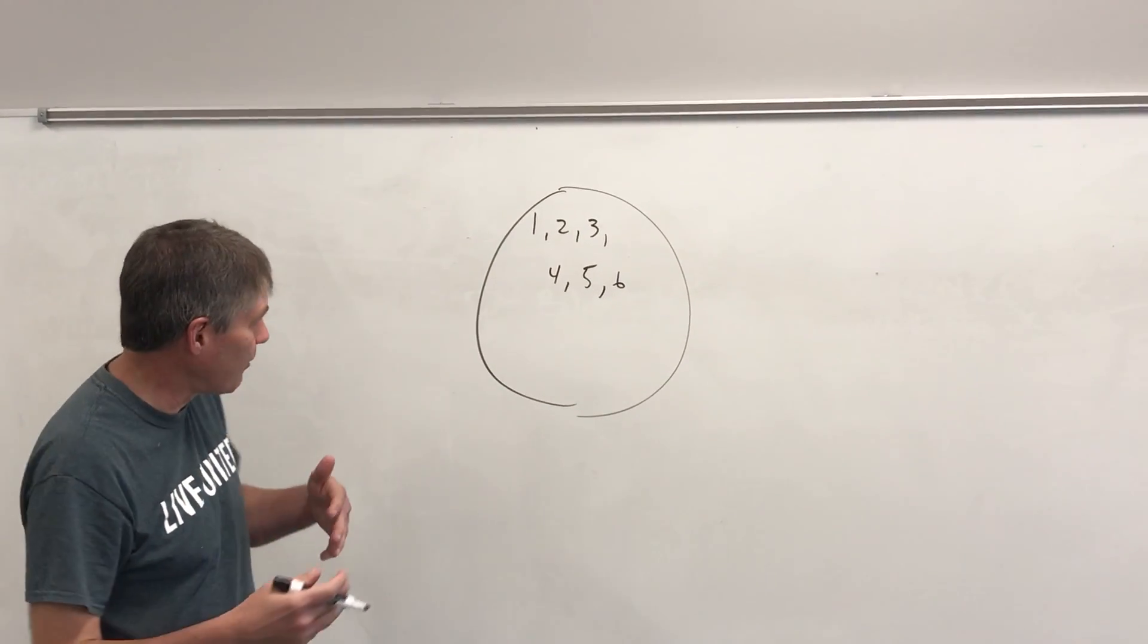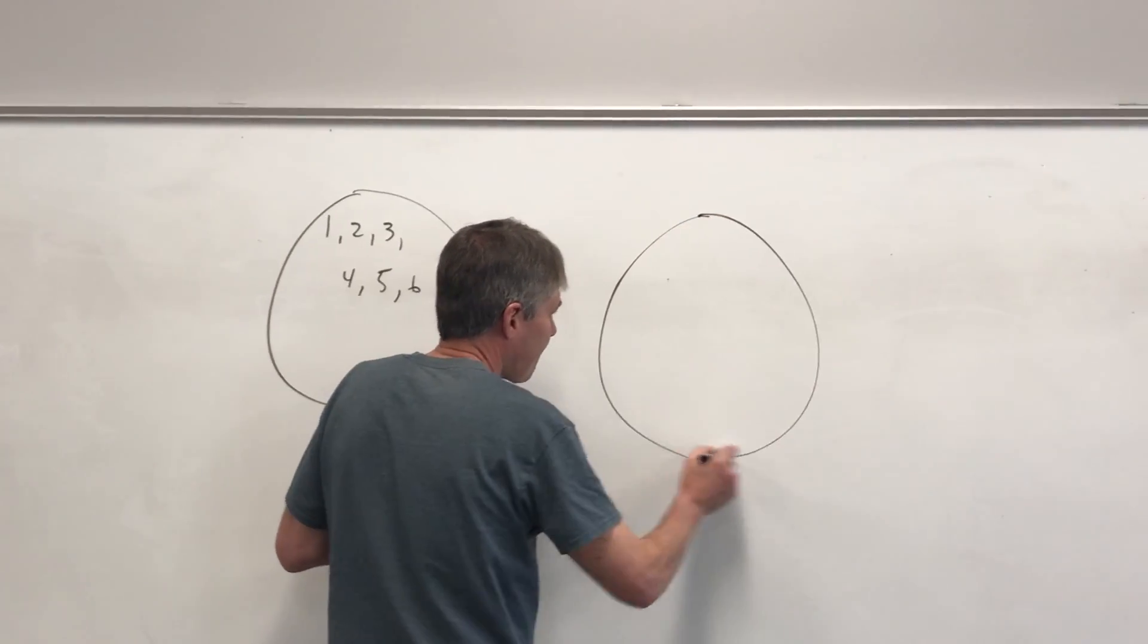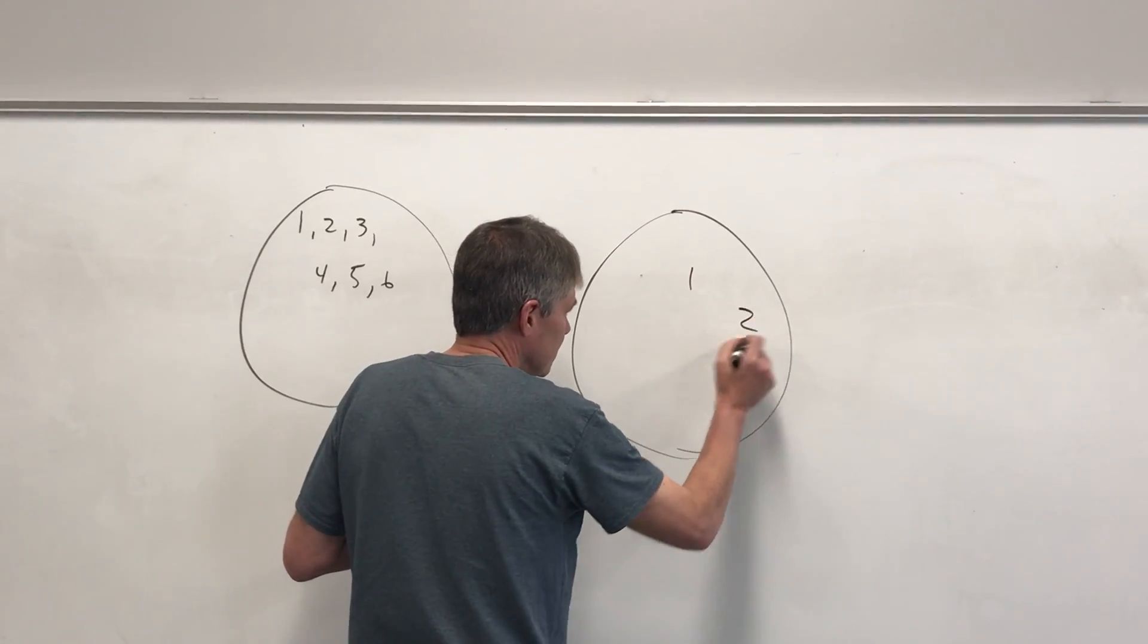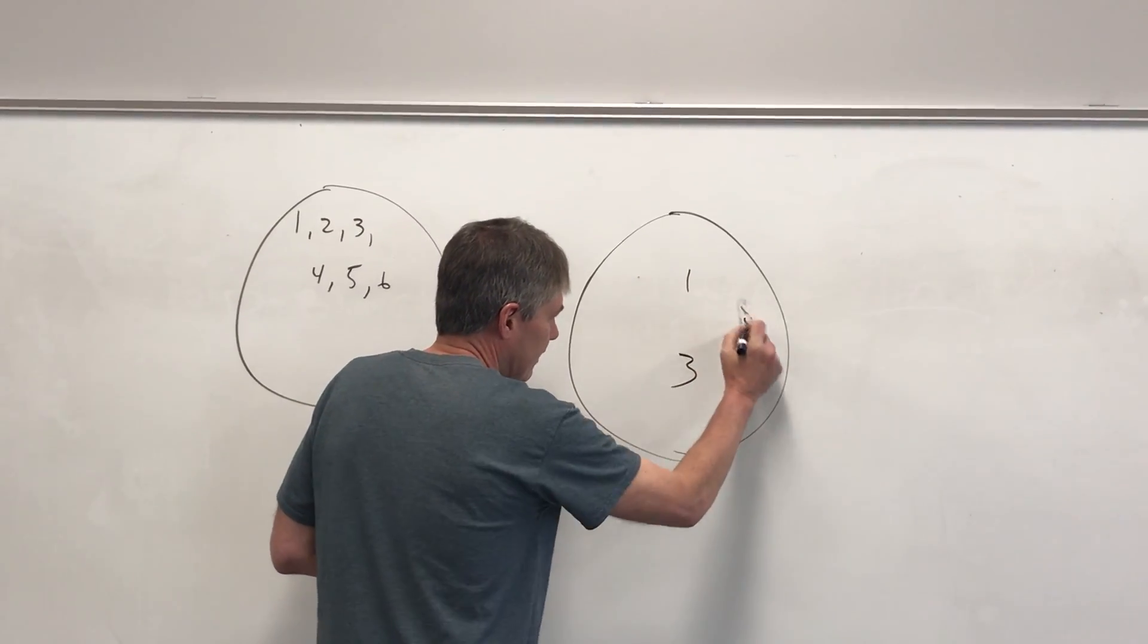Now let's say I have a subgroup. Let's say I want all the odd numbers: 1, 3, and 5.